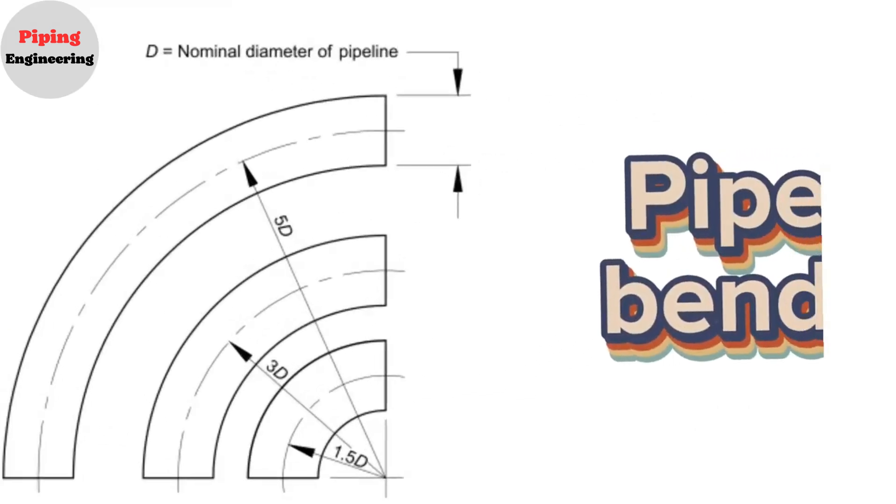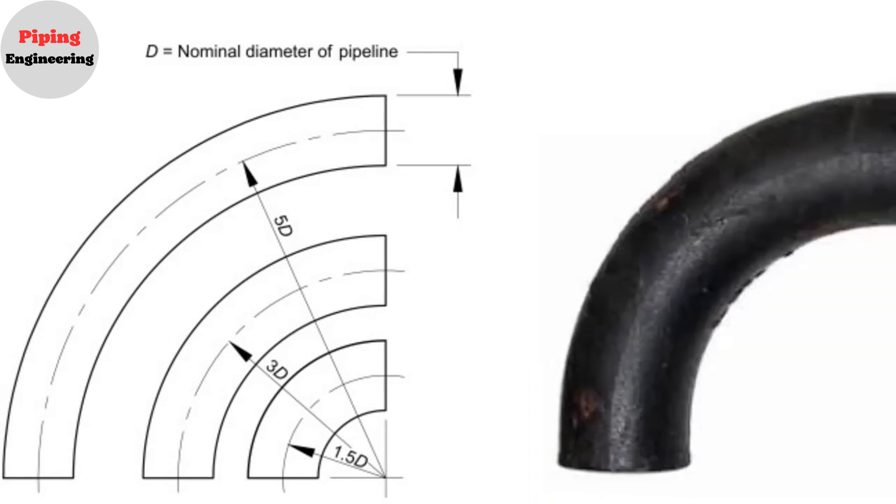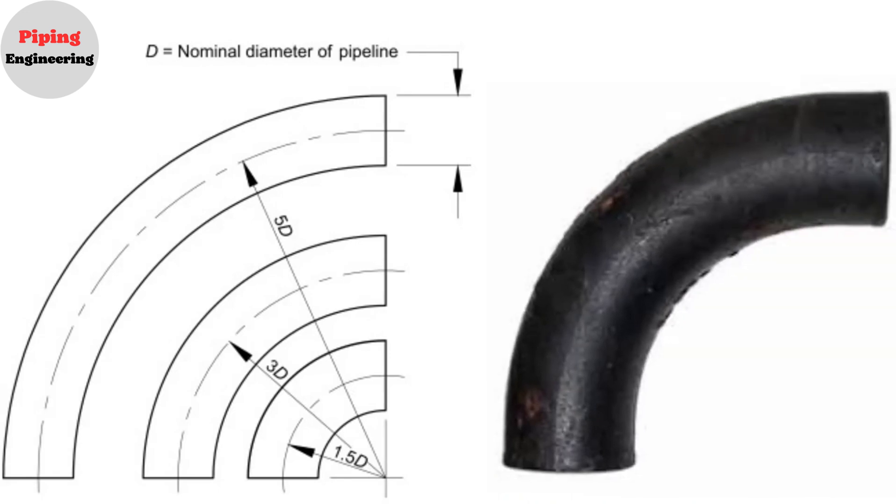In addition to standard elbows, pipe bends elbows are also used in pipe fabrication. Pipe bends, often referred to as elbows, are special pipeline components widely used in pipelines. Bends are made from straight pipe.